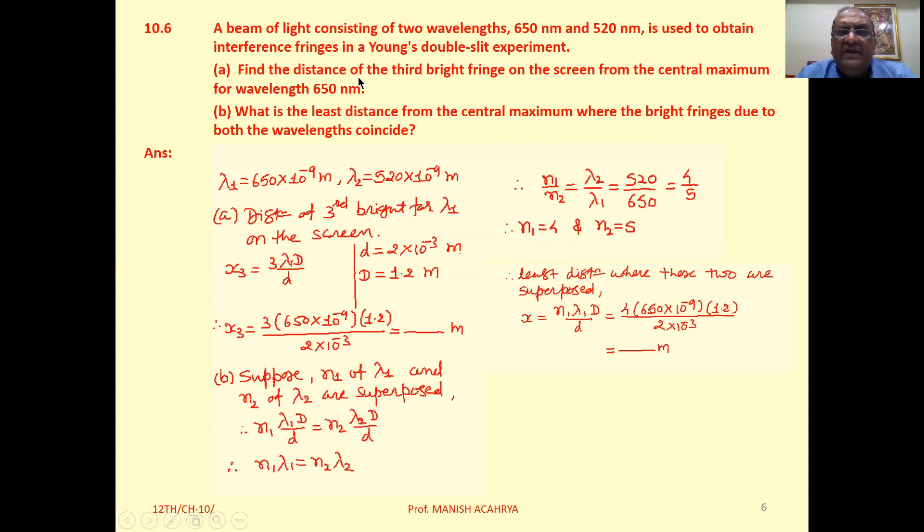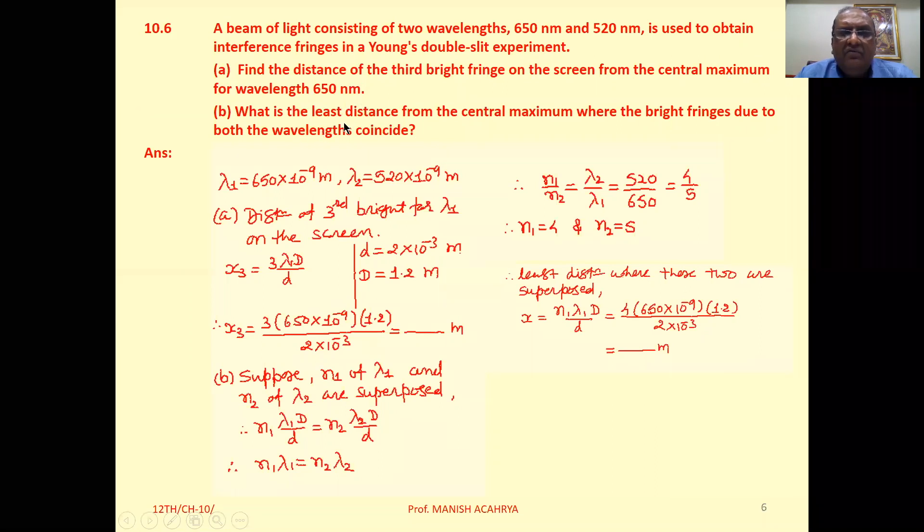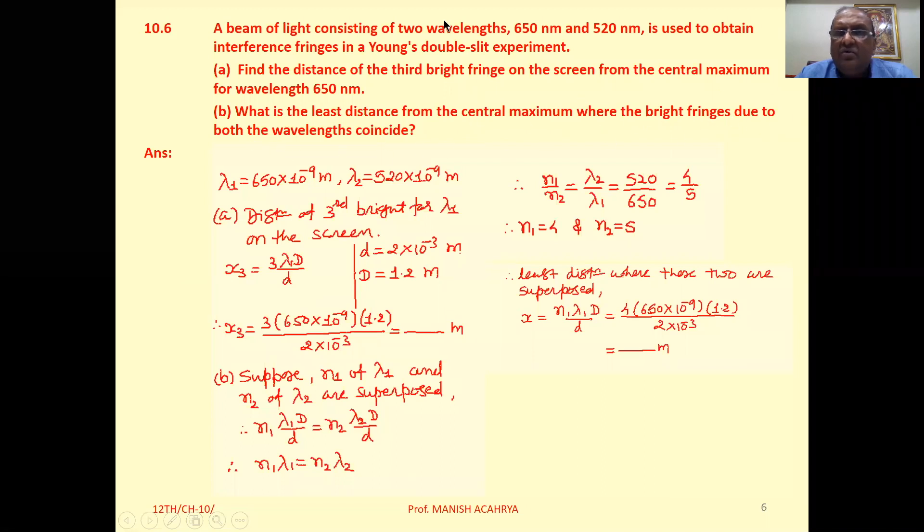Part A: Find the distance of the third bright fringe on the screen from the central maximum for wavelength 650 nanometer. Part B: What is the least distance from the central maximum where the bright fringes due to both the wavelengths coincide?